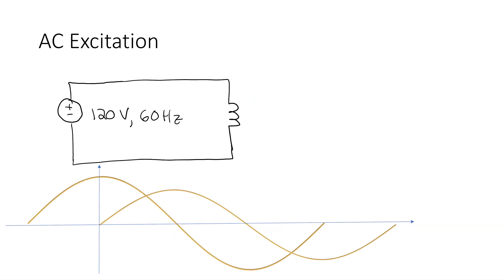We talked about this effect of saturation. Today I want to talk about AC excitation. If I apply a voltage to an inductor, why would I talk about a 60 Hz voltage in particular? Because that's what we have in the power system — the whole power grid across all of North America is 60 Hz. As we're going to start dealing with next week, we're going to start talking about transformers.